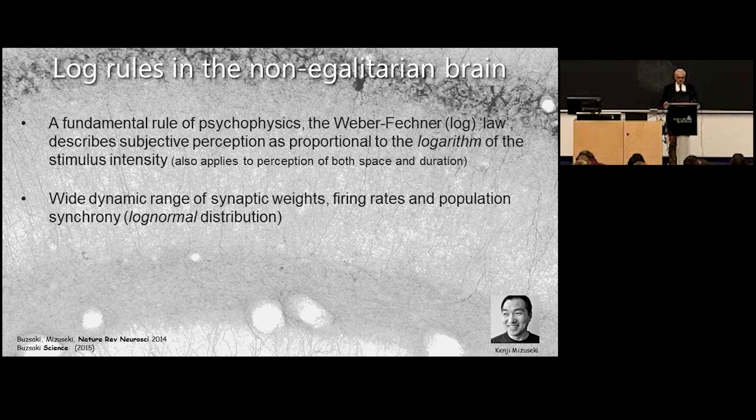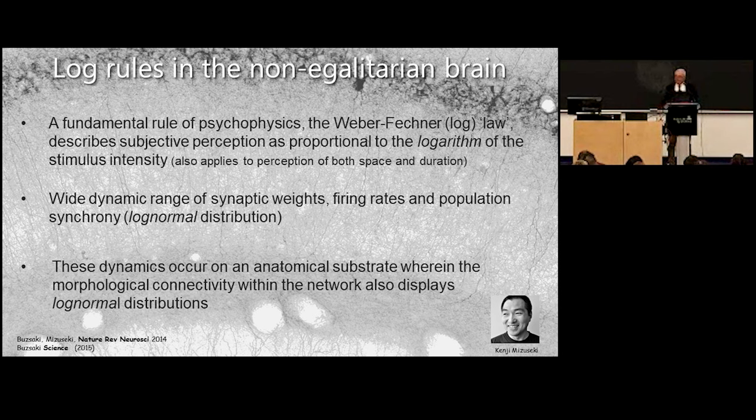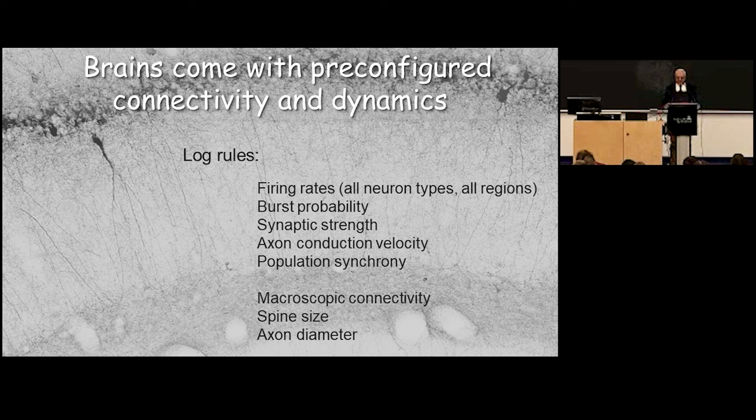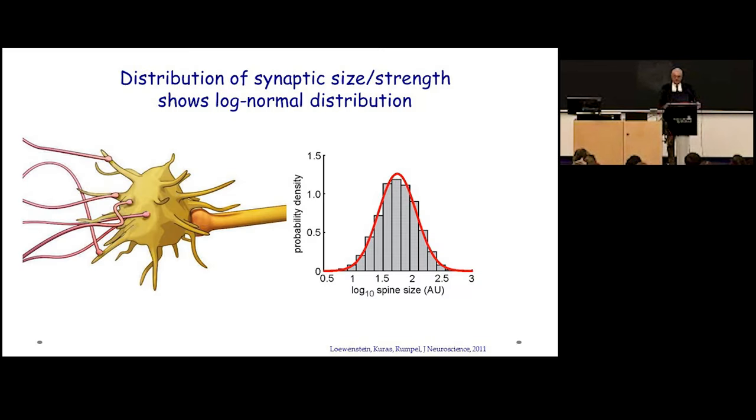It's a log rule and it turns out that almost everything in the brain is log normally distributed which is a dynamical system. Now these dynamical laws are based on a distribution of a structure and the structural elements are also log normally distributed. For example firing rates of the neurons, the burst probability, synaptic strength, axon conduction velocity, population synchrony and so on. It means that 10 percent are as valuable than 90 percent when it comes to value or measure of performance. Now the same also applies it doesn't matter whether you look at the connectivity at the macroscopic level or the single neuron level the spine level and so on.